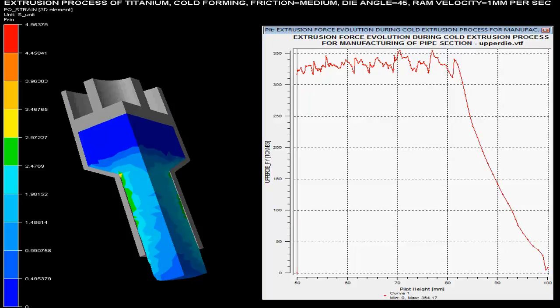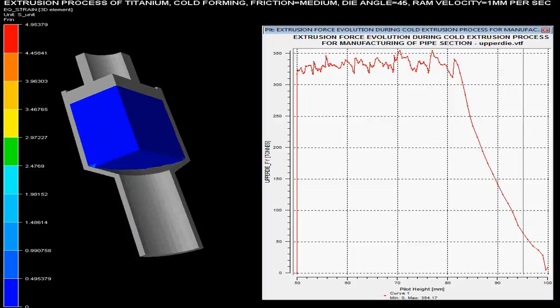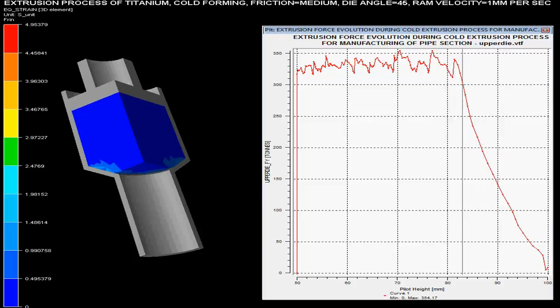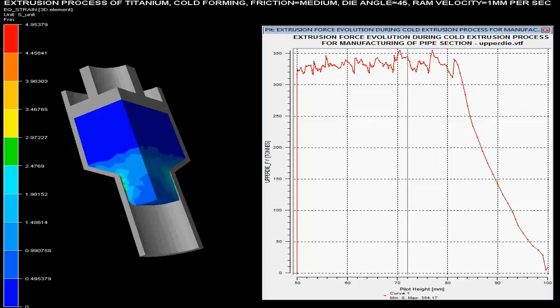Extrusion forces with respect to the pilot height are shown on the graph. These forces are maximum when there is a sudden change in the area of the cross section of the billet. As the pilot height reduces, the force required for extrusion of solids increases.